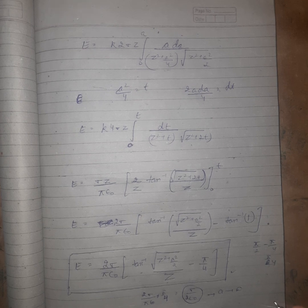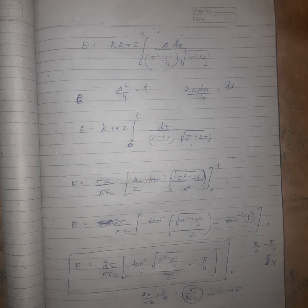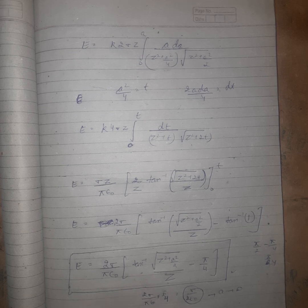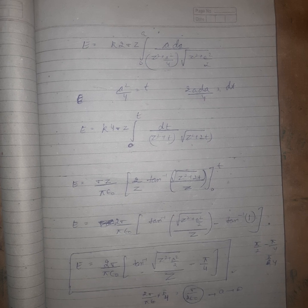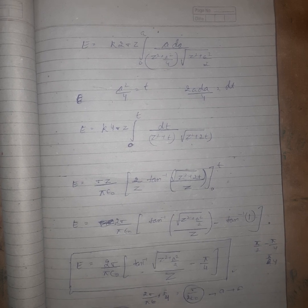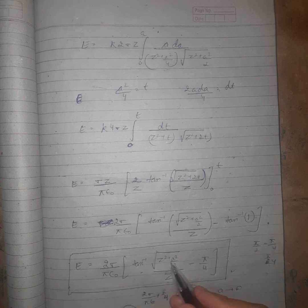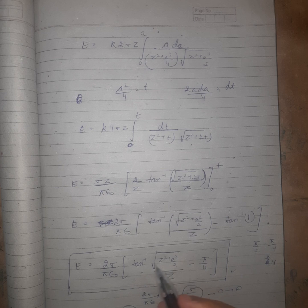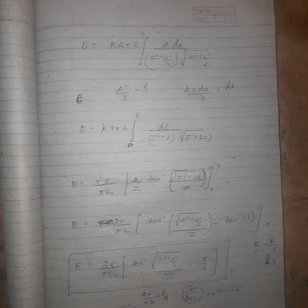If z is very much greater than a, the square acts as a point charge. The electric field for a point charge is E = kq/z². When z >> a, the extra terms go to zero and we are left with kq/z², confirming the point charge limit. That's all for this video — see you in the next one.